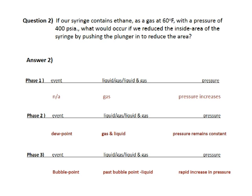Question number two: if our syringe contains ethane as a gas at 60 degrees Fahrenheit with a pressure of 400 psia, what would occur if we reduce the inside area of the syringe by pushing the plunger in? For answer number two, I would like to break that answer down into three phases: phase one, phase two, and phase three.